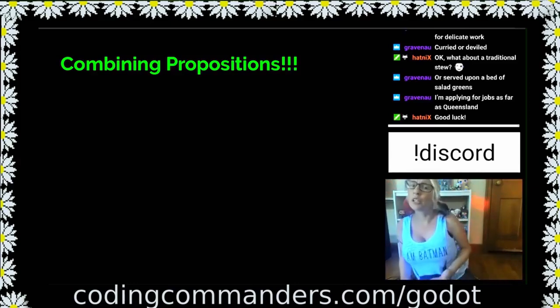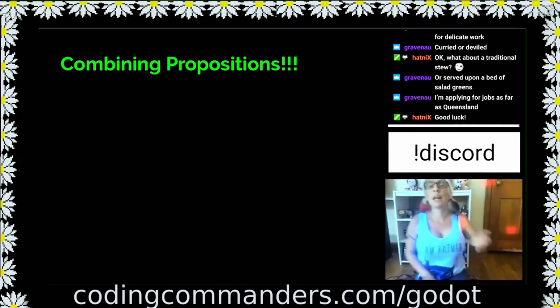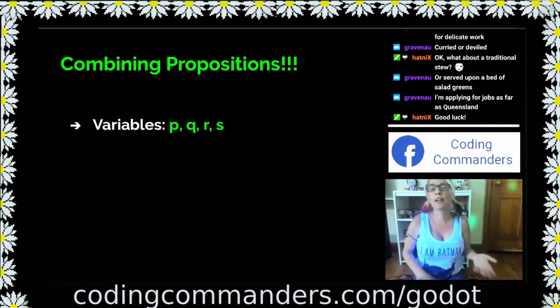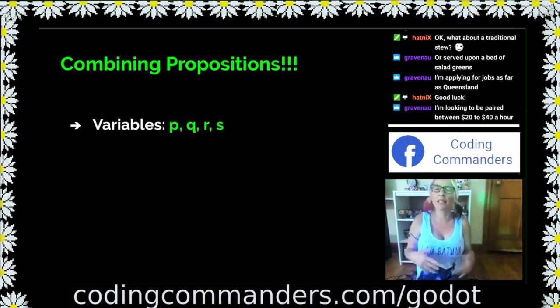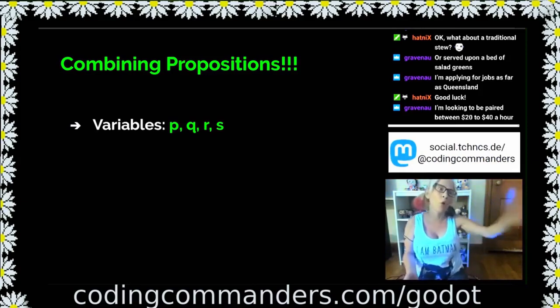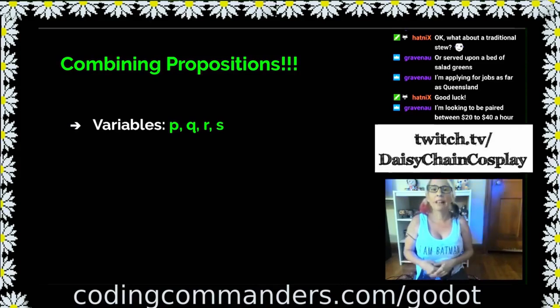Oftentimes, usually when we're trying to solve a problem, we have to combine propositions together in order to solve the problem. We do this by using variables like P, Q, R, S. In propositional logic and in logic, P, Q, R, S are like the standard variables used, but anything can be a variable. We already went over variables, things like that, var hatniks, var king, var average, anything can be a variable.